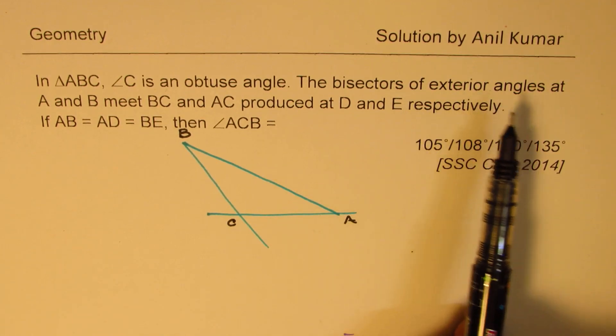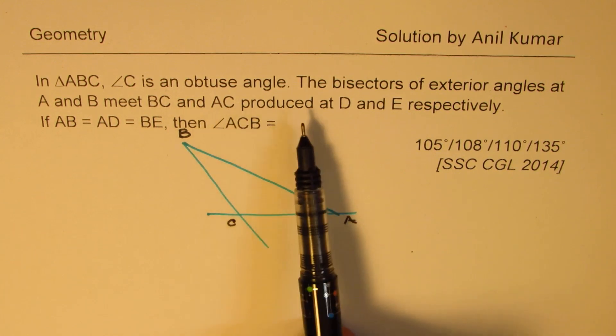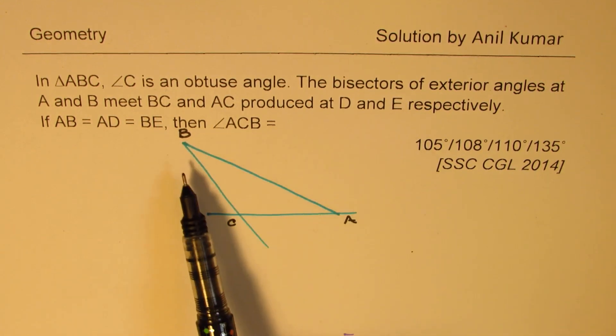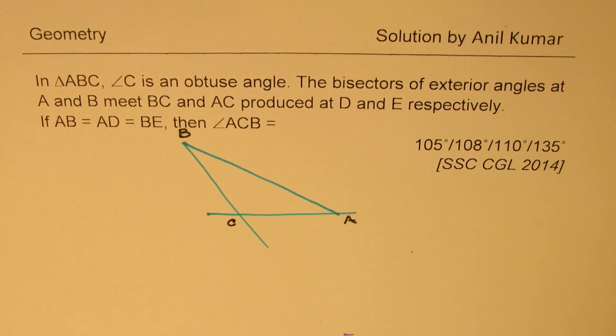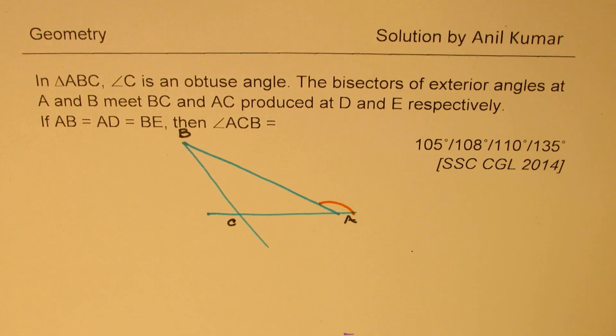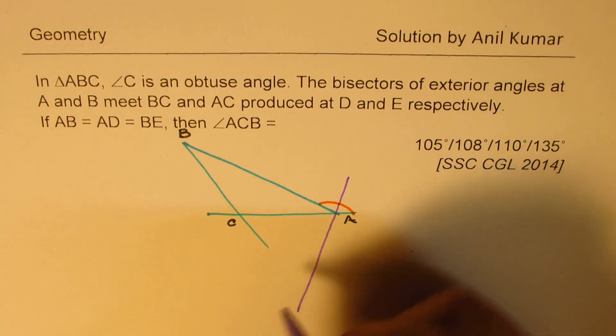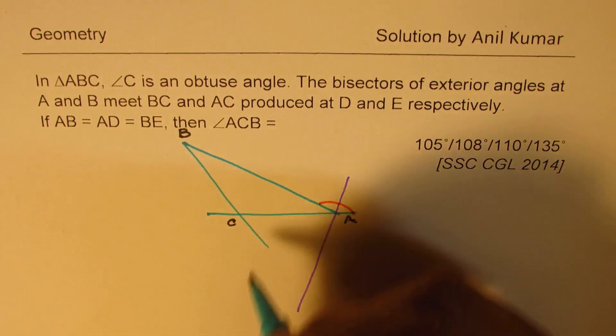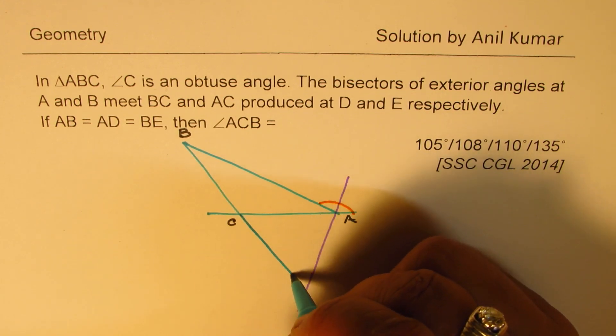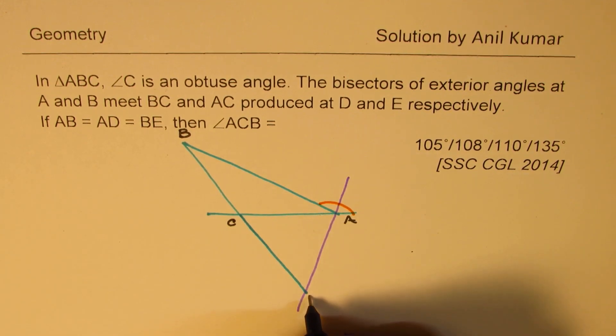Now here we have C, A and B. The bisectors of exterior angles at A and B meet BC and AC produced at D and E. It means you have to extend these sides. It makes sense. Exterior angle at A is this angle. Now, if I have to draw a bisector at this, then it will be like this. So that becomes the bisector. Now, as you can see, I need to extend this line further to get the point D where it meets. So we get our first point.